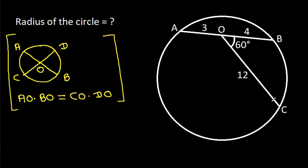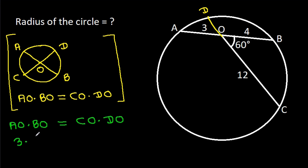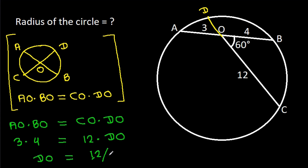If we extend CO to D, then AO times BO equals CO times DO. AO is 3 times BO is 4, equal to CO is 12 times DO. So DO will be equal to 12 divided by 12, that will be 1.